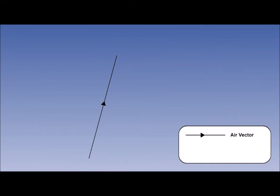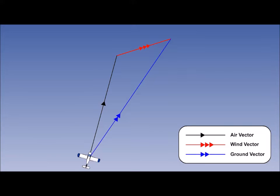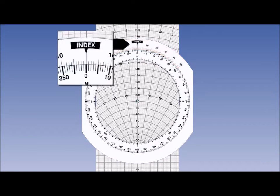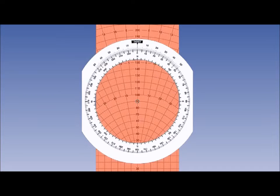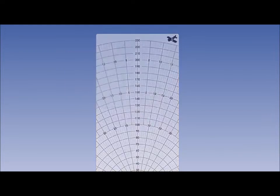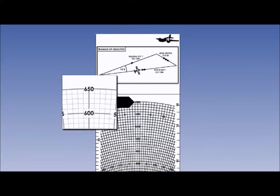The first side of the Triangle of Velocities is called the air vector. The second side is called the wind vector. The line joining these two vectors is the resultant — the ground vector. The angle between the air vector (the direction the aircraft is heading) and the ground vector (the track the aircraft follows over the ground) is known as the drift angle. The main components of the wind face of the navigation computer are the rotating scale and window, the fixed drift scale, the index mark on the drift scale, and the slide. The slide is two-sided: one side gives a low speed range up to 230 knots, and the other a high speed range between 150 and 650 knots.